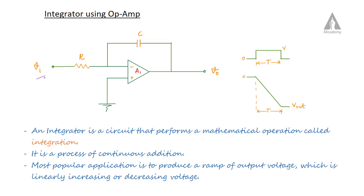Here we have an input voltage V1 and we will get the output voltage V0. The input voltage V1 is connected to the inverting terminal of the operational amplifier through the resistor R. The non-inverting terminal is grounded. Here we have a feedback circuit from the output to the inverting input, but it is connected through a capacitor C instead of a resistor.